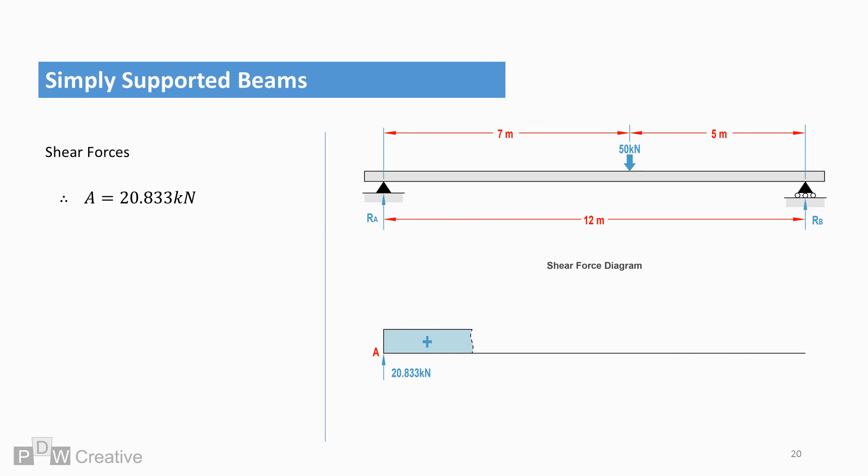At point A, the reaction force is active. The force is drawn constant until we reach the next point load. At point B, the shearing crosses to the negative region.